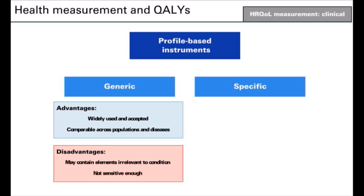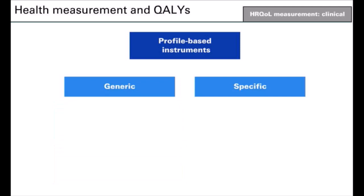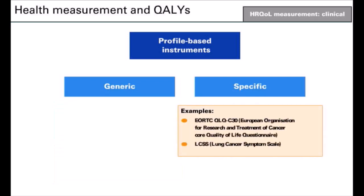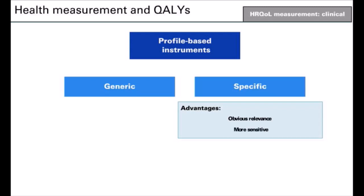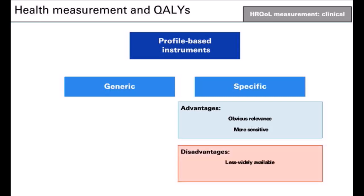Generic instruments may not be sensitive enough to detect small but clinically relevant changes. Specific instruments relate to a particular disease, population, intervention, or health domain. They have obvious relevance to the population of interest and are more sensitive, so may be able to detect small but clinically relevant changes. However, they are less widely available than generic instruments and cannot be compared across populations and diseases.